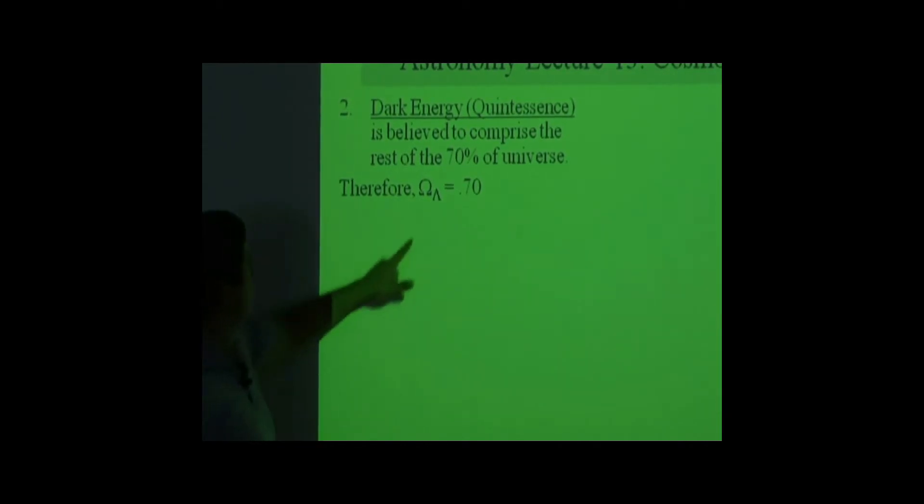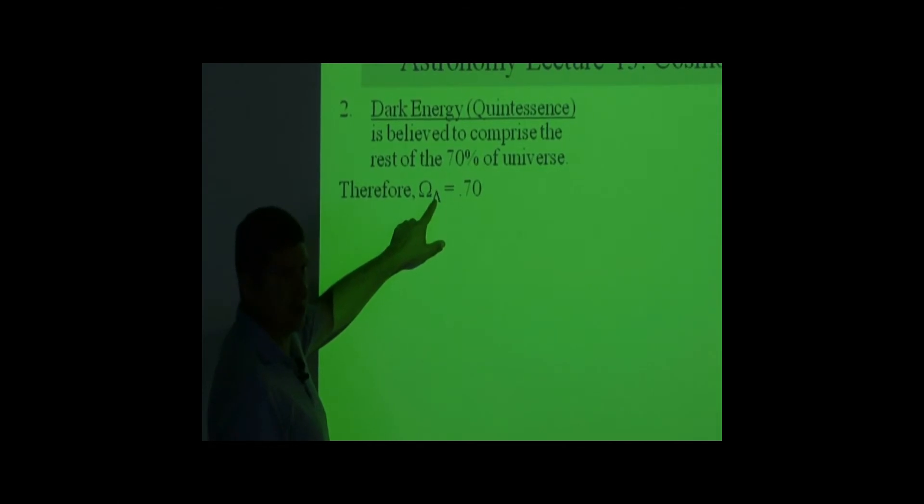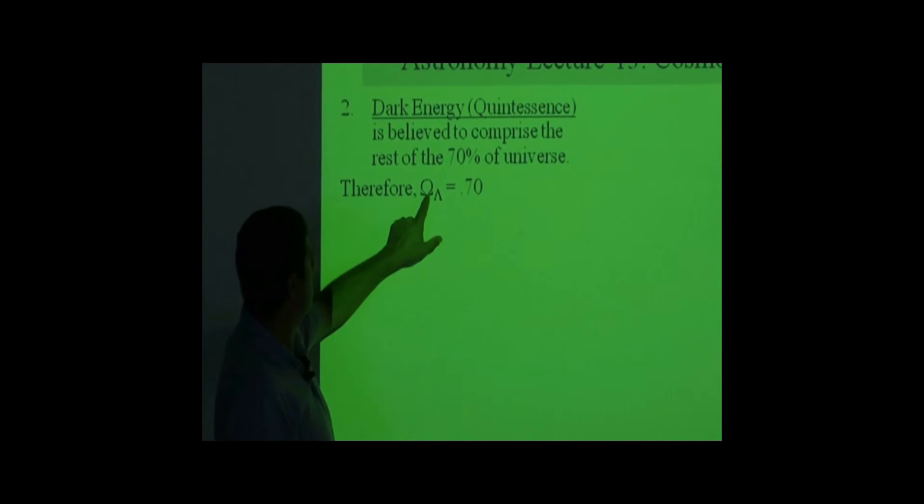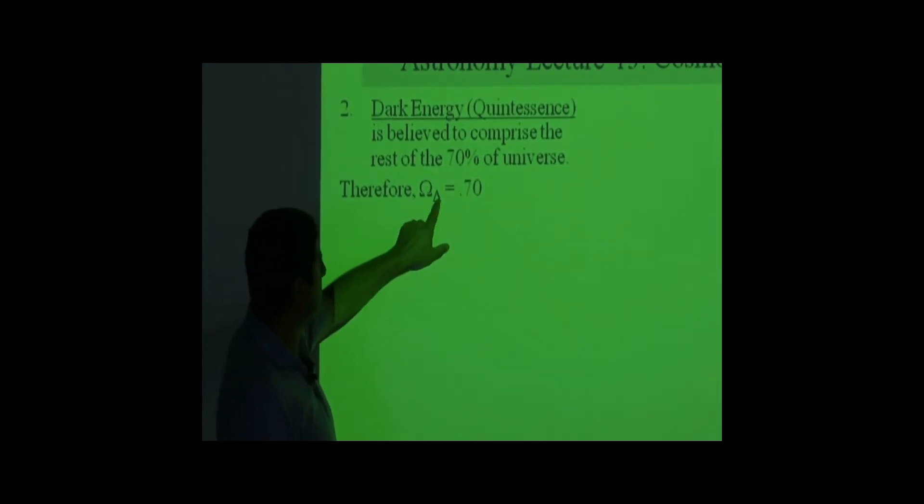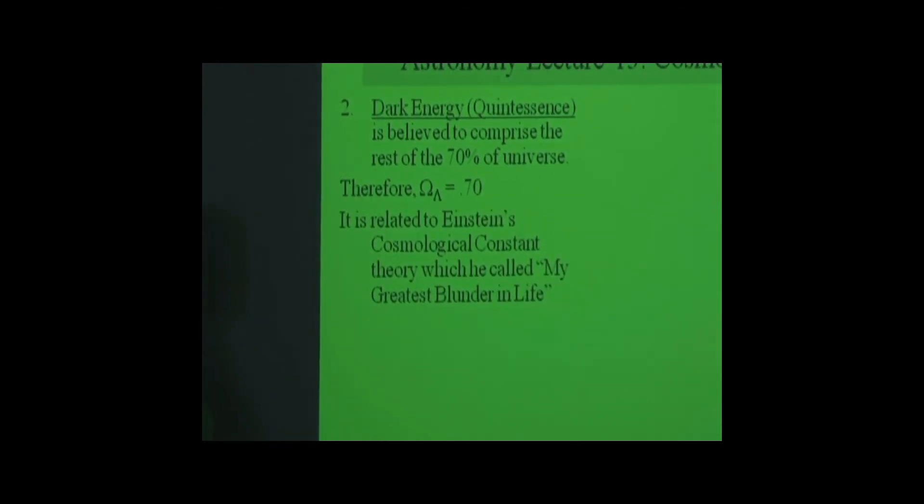Therefore, omega lambda is the density of dark energy, is known as 0.70. The density of lambda means dark energy, and it's 0.7. It is related to Einstein's constant.